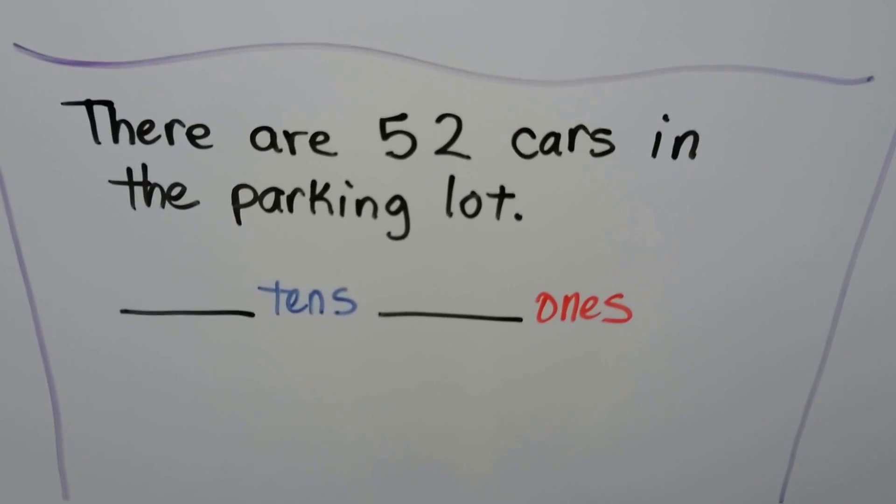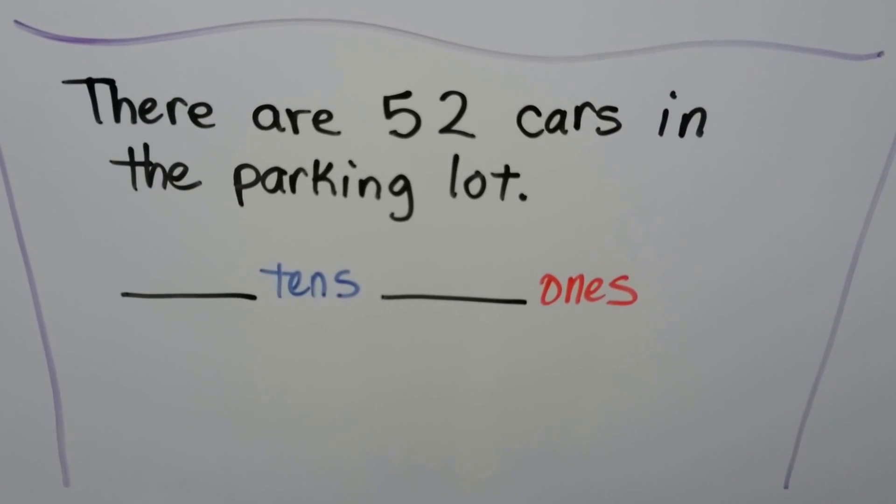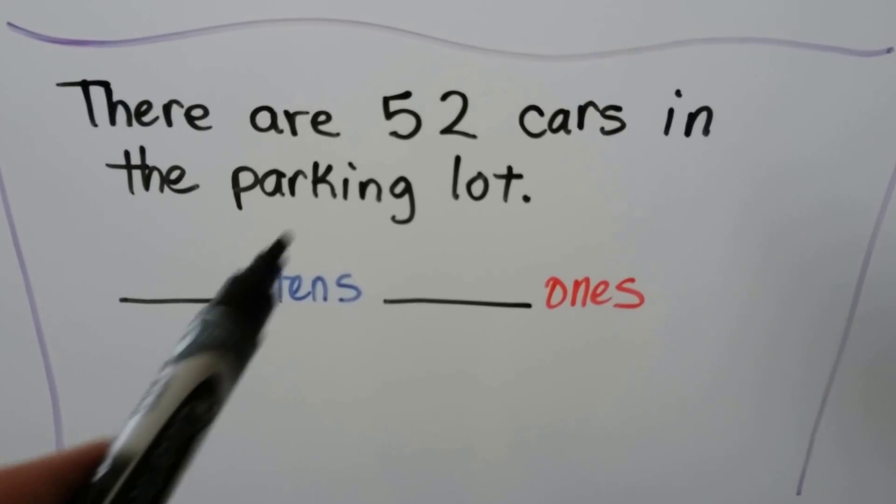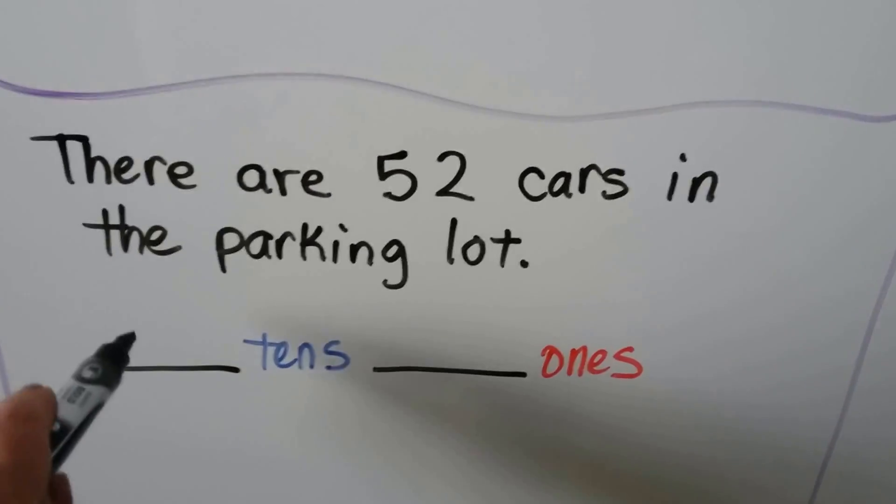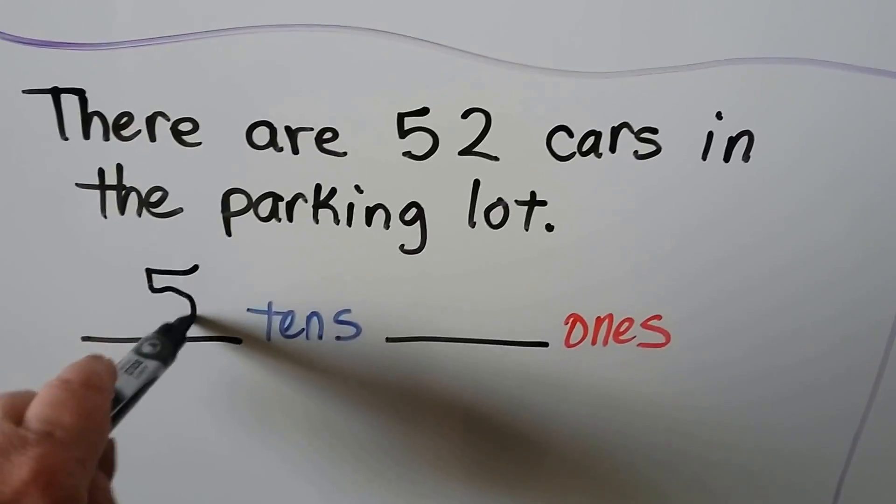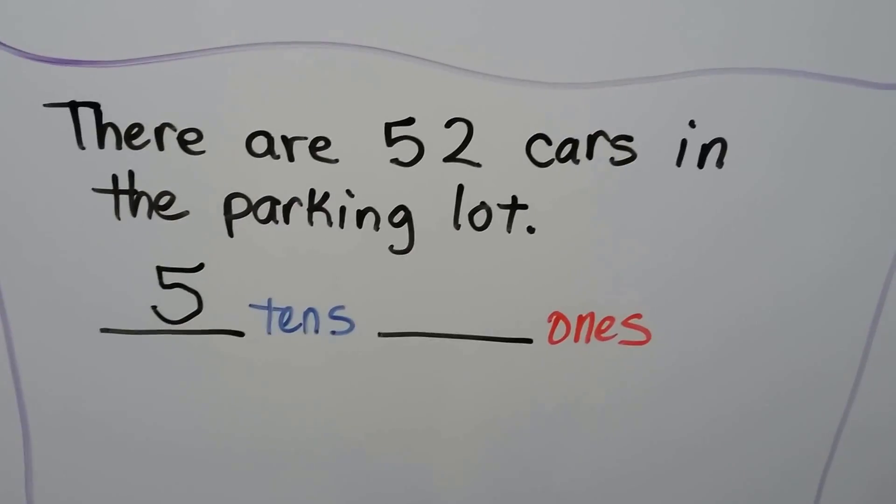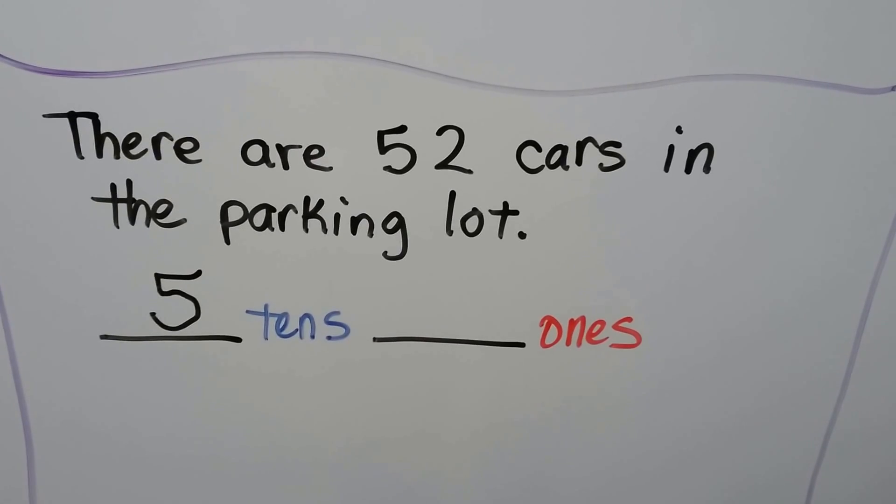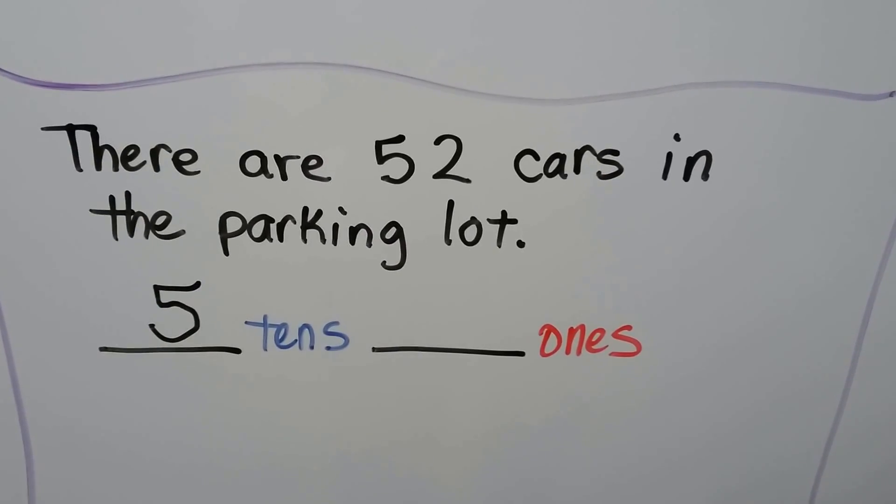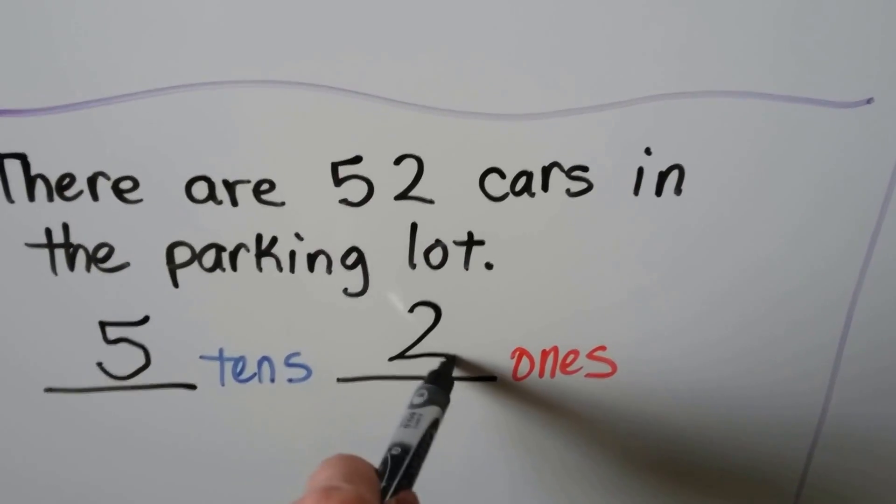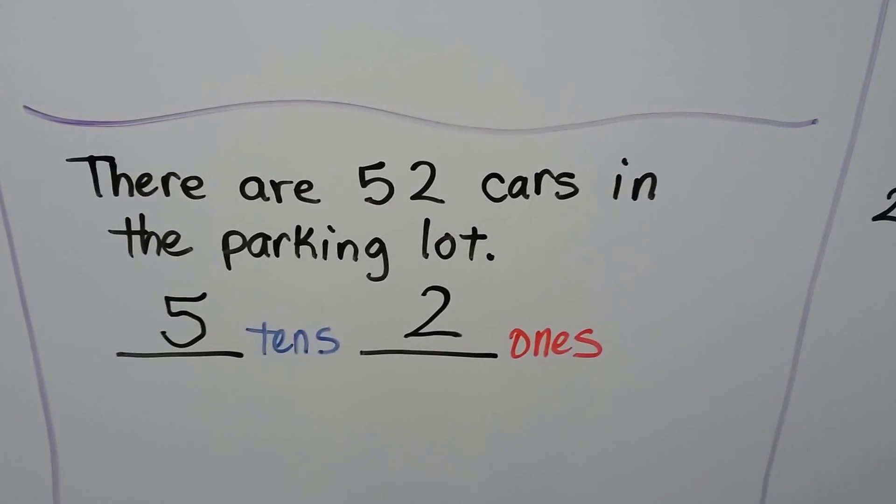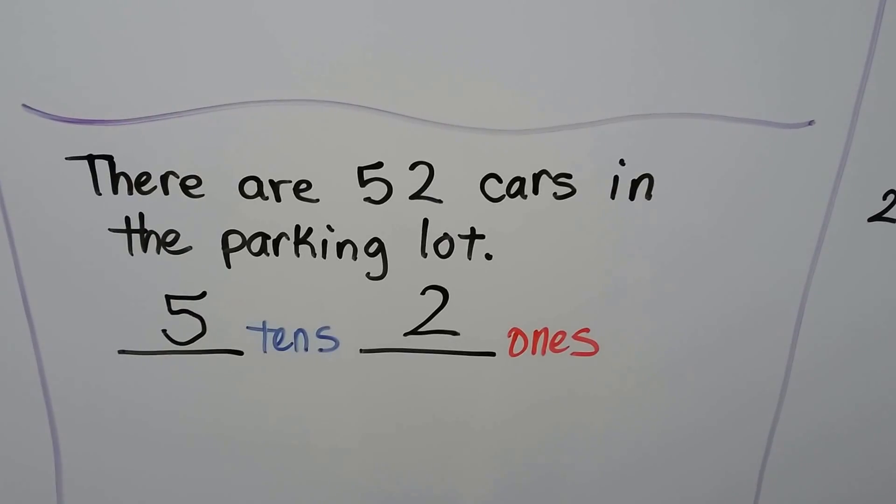There are 52 cars in the parking lot. How many tens are in 52? There's 5 tens. There's a 5 in the tens place. How many ones are in 52? There's 2. There's a 2 in the ones place. Five tens and 2 ones is 52.